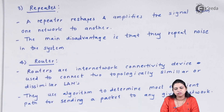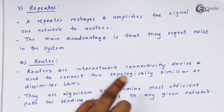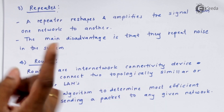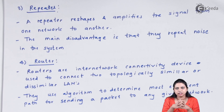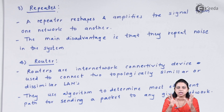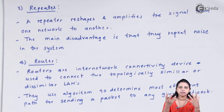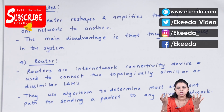The last connectivity device is the router. Routers are internet network connectivity devices used to connect two topologies — similar or dissimilar LANs. When we connect more than one LAN to each other, we use a router. Routers use algorithms to determine the most efficient path for the delivery of a message. They are more intelligent and can determine the shortest path to deliver the packet or data. These are the four connectivity devices: modem, hub, repeater, and router.